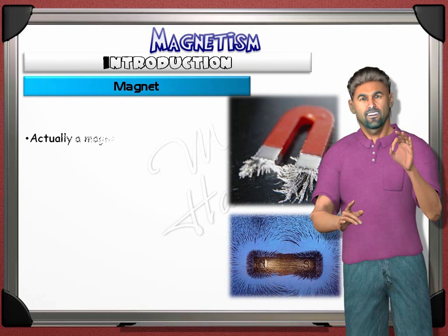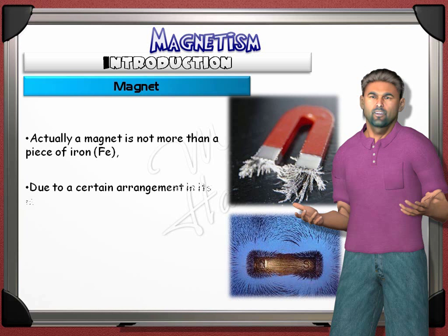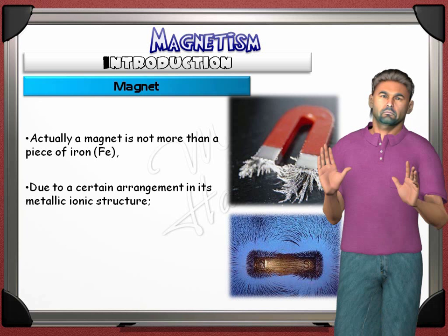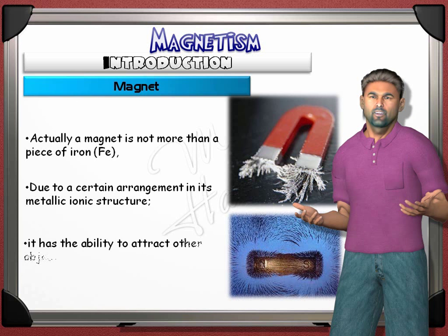The first thing we have to know is that there is nothing special about the material of the magnet. It's no more than a piece of iron, with symbol Fe as in chemistry. But what gives it special properties, like attracting other objects made of iron, is the arrangement of its ions. The details of the inner structure of ions is not included in the syllabus. A magnet has the ability to attract objects made of iron, steel, cobalt, and nickel.